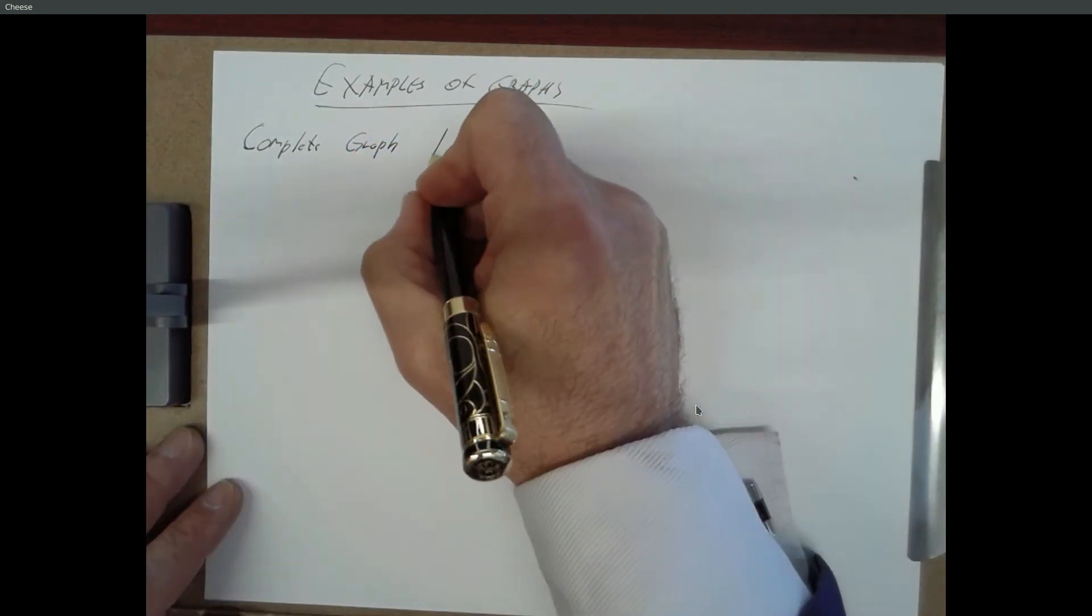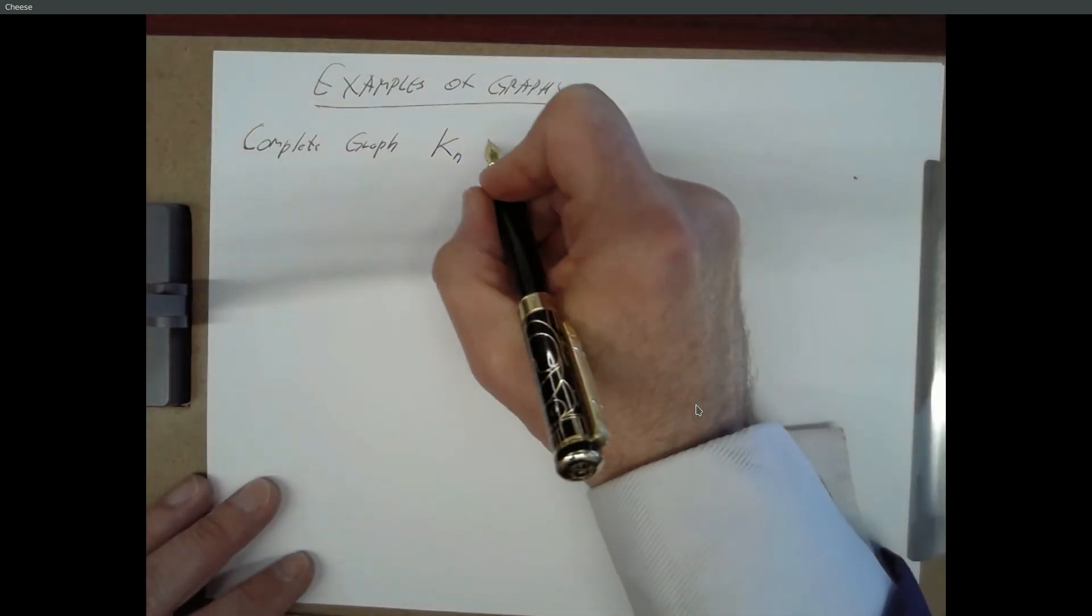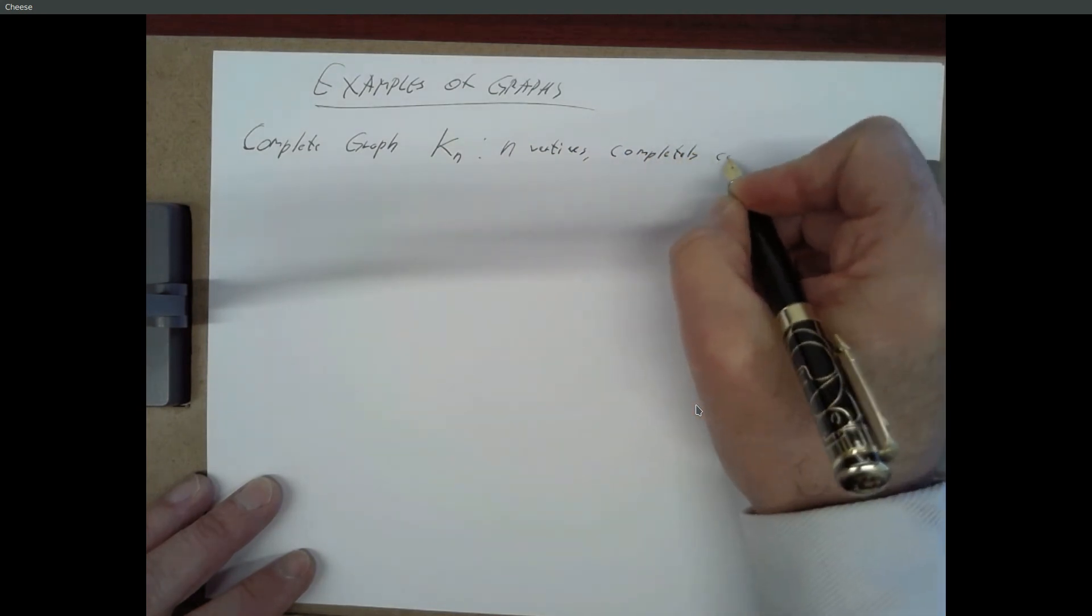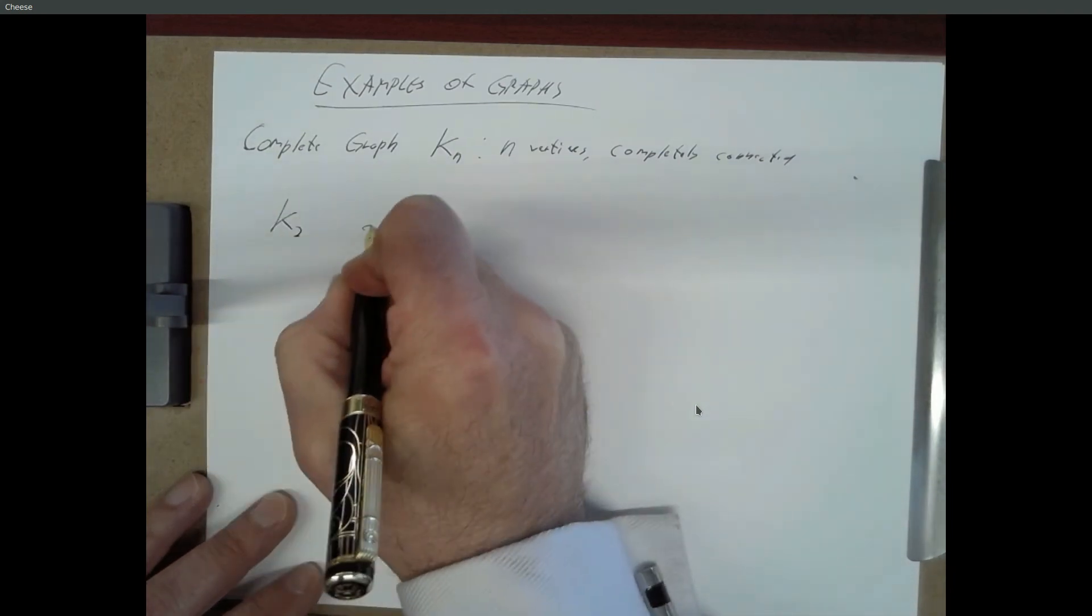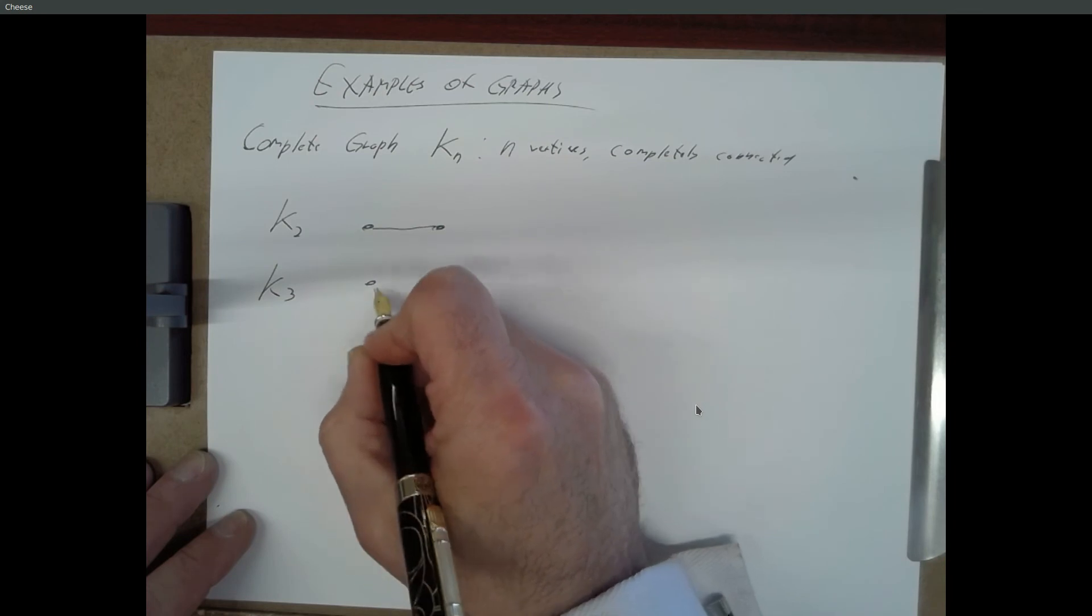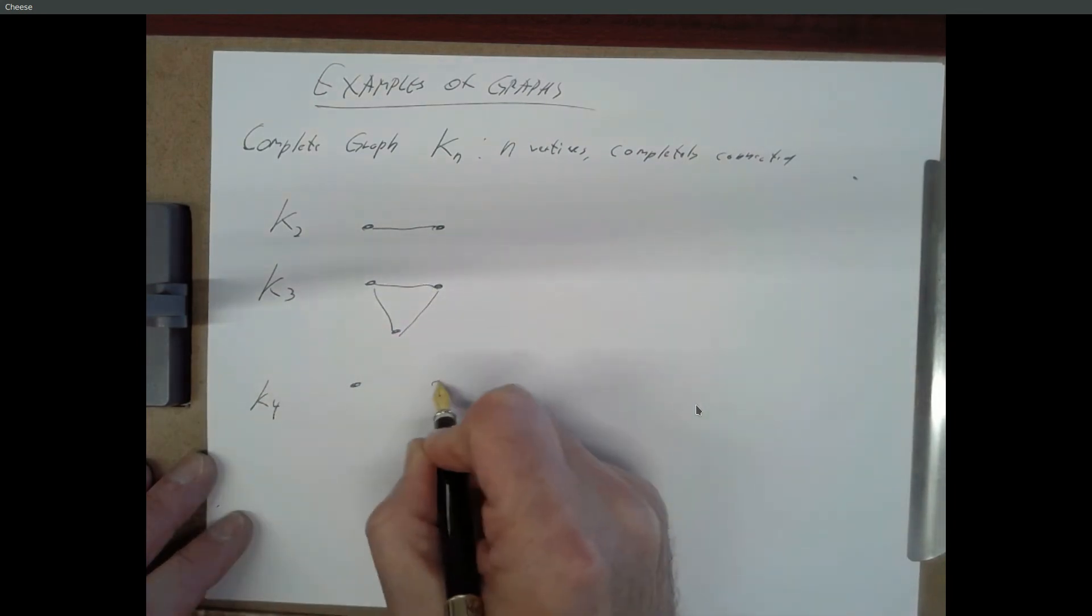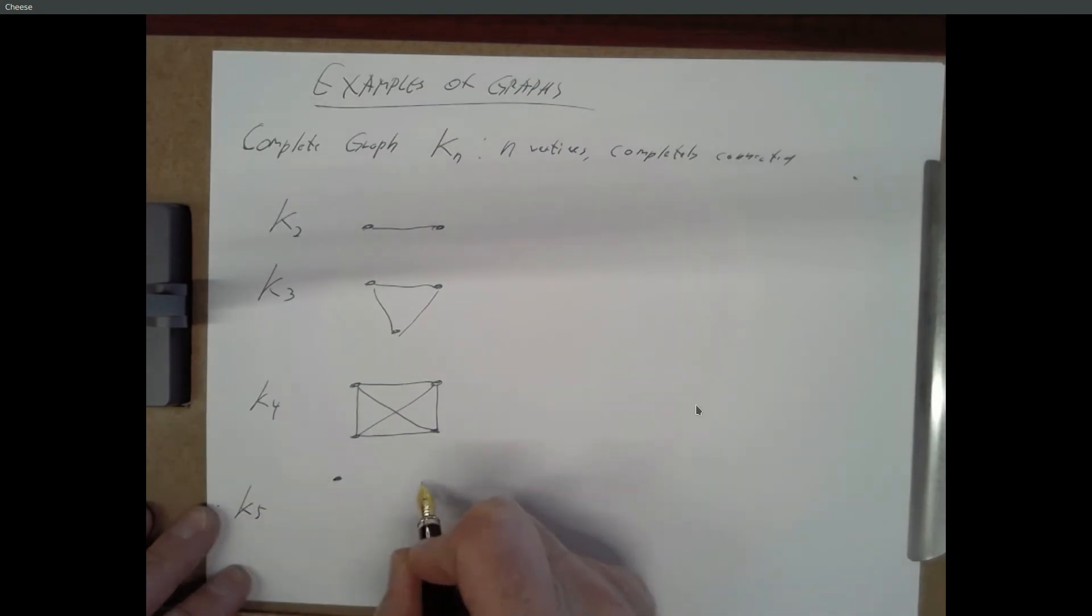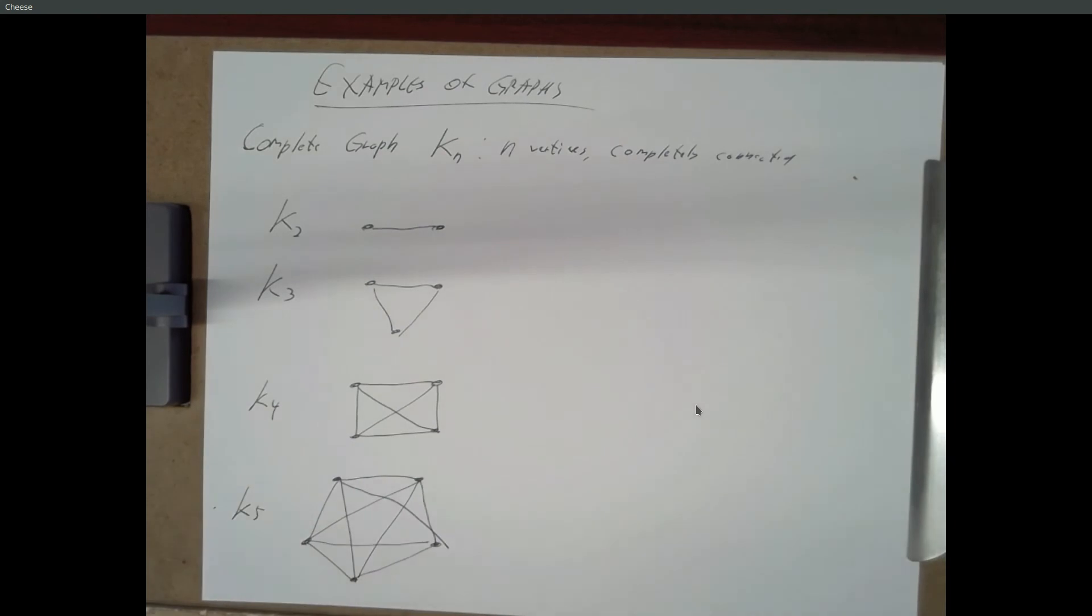So, a complete graph. Complete graphs are represented by K sub N. So, we're going to have N vertices. And they're completely connected. So, K2, two vertices connected. K3, three vertices, every pair of vertices connected. K4, four vertices, every pair of vertices connected. K5, five vertices, every pair connected.